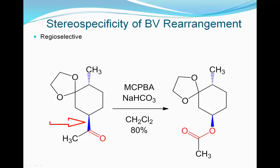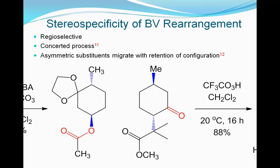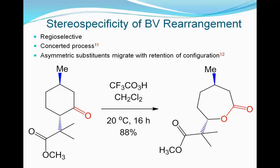As the Baeyer-Villiger oxidation is regioselective, the oxygen will be inserted next to the cyclohexyl group. Since the rearrangement is a concerted process, the configuration of the migrating chiral substituent is retained. Similarly, in the following Baeyer-Villiger oxidation, the preferential migration of the more substituted secondary alkyl group is observed without scrambling the stereogenic configuration, and the configuration at the chiral carbon is retained in the product.